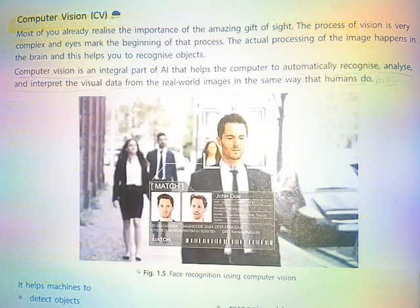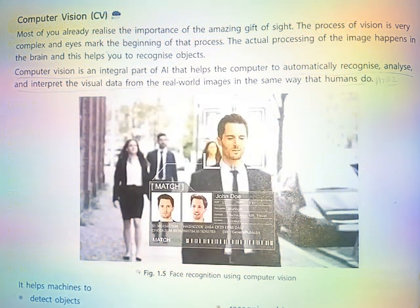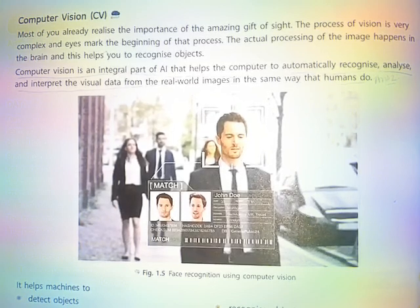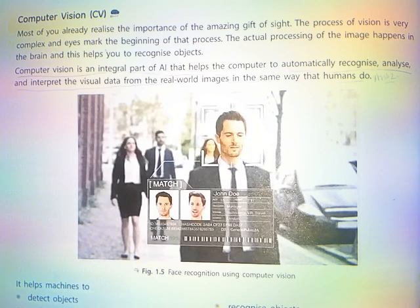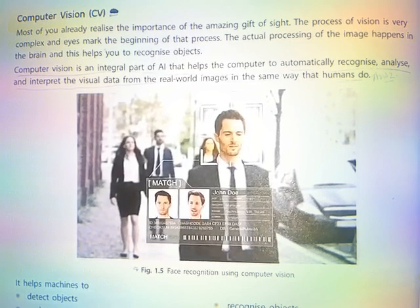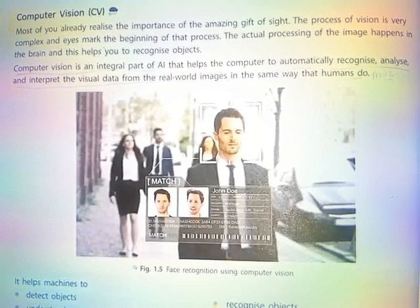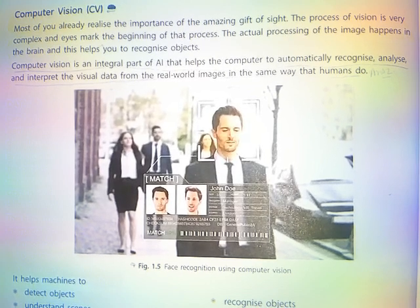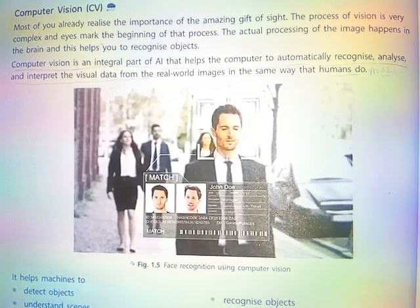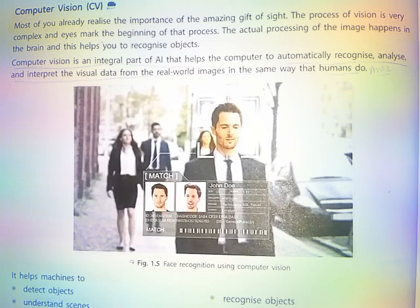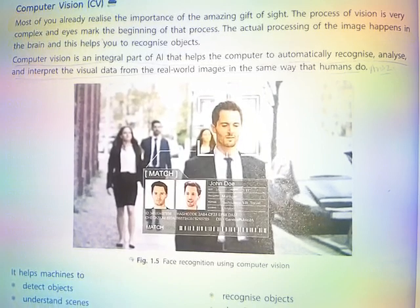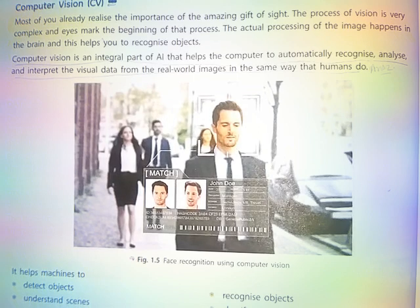Computer Vision. Most of you already realize the importance of the amazing gift of sight. The process of vision is very complex and eyes mark the beginning of that process. The actual processing of the image happens in the brain, and this helps you to recognize objects.